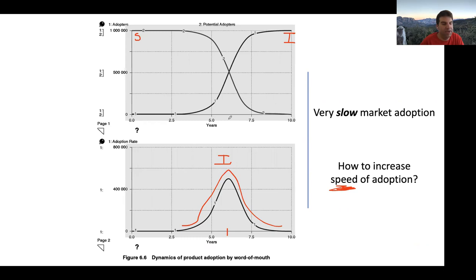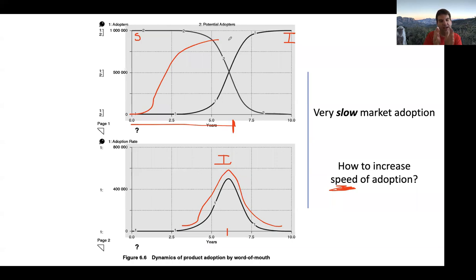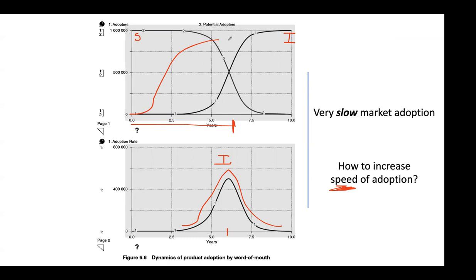Looking at this not from a disease perspective but from a market adoption perspective: if it takes six years for people to really start adopting your product, that may not be enough — you'd much rather the curve start rising earlier. The question is how do we increase the initial growth of adoption. From the reading assessment before class, in any market adoption you ultimately want to depend on word of mouth, but before word of mouth — you have to advertise. Advertising is what we're shooting for here.